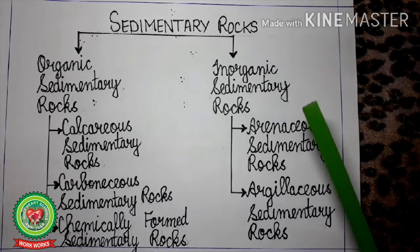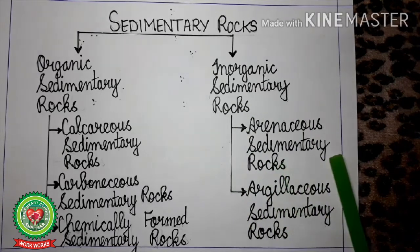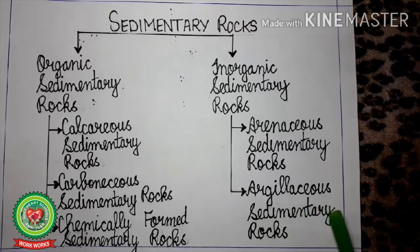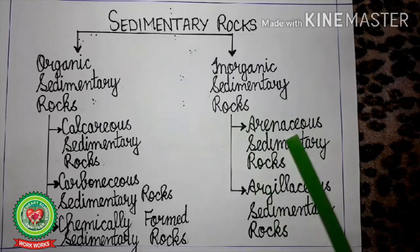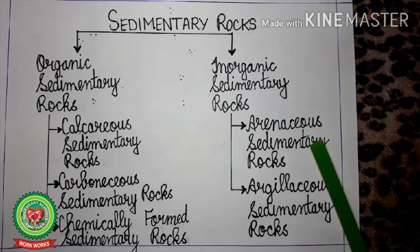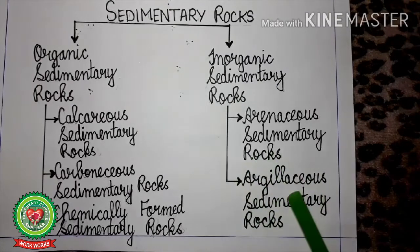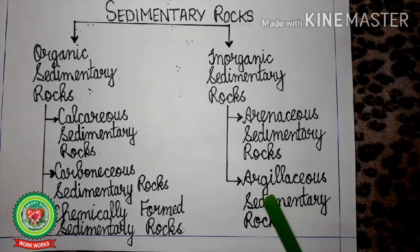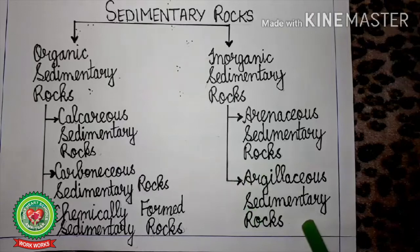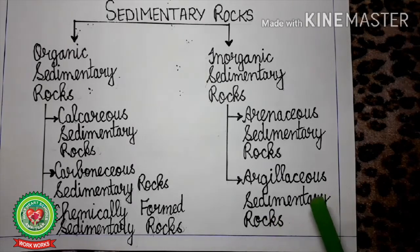Inorganic sedimentary rocks are divided into two parts: arenaceous and argillaceous. The word 'arenaceous' comes from the Latin word 'arena' meaning sand, so the main component is sand — sandstone is the best example. The word 'argillaceous' comes from the Latin word 'argil' meaning clay, so argillaceous sedimentary rocks are rich in clay. These rocks are soft and absorb water quickly.